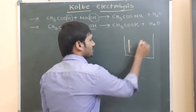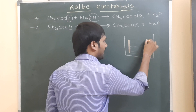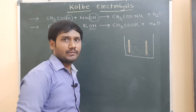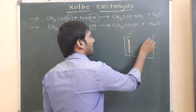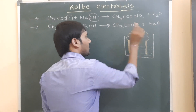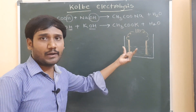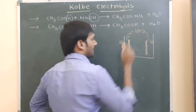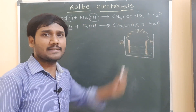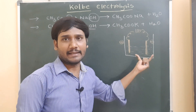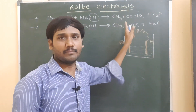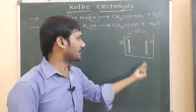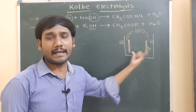In this electrolytic cell, I am arranging two electrodes — one acts as cathode and the other acts as anode. These two electrodes are attached to a battery with wire. When electricity is passed, the sodium or potassium salt of carboxylic acid and water break into ions.